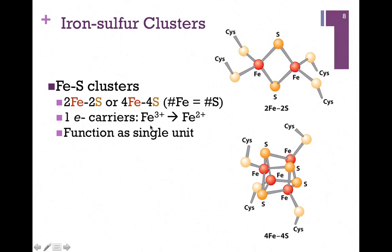The iron atom goes from the oxidized form, Fe³⁺, to the reduced form, Fe²⁺. Now it's tempting to say that a two-iron, two-sulfur cluster can carry two electrons, or a four-iron, four-sulfur cluster can carry four electrons. But whether it's two iron atoms or four, they function as a single unit. So no matter how many iron atoms are present in the cluster, they only carry one electron at a time.